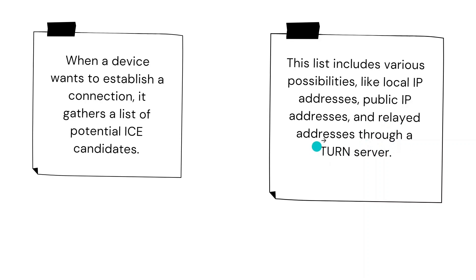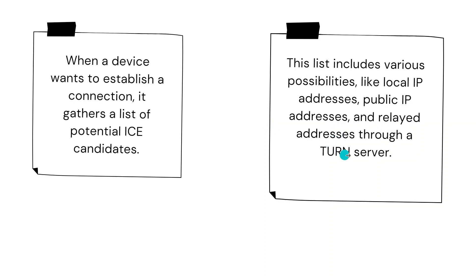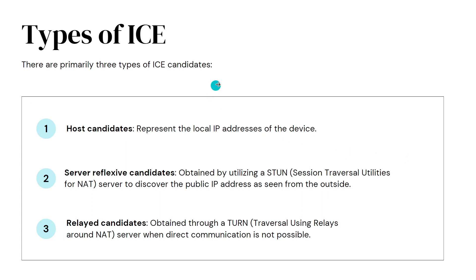We just discussed TURN server. In the third case, these two devices are not going to communicate directly. They are going to first send their information — like their media — to some third-party server, and then that third-party server is going to relay that information to the other client they want to connect with. So let's now understand what the different types of ICE candidates are.